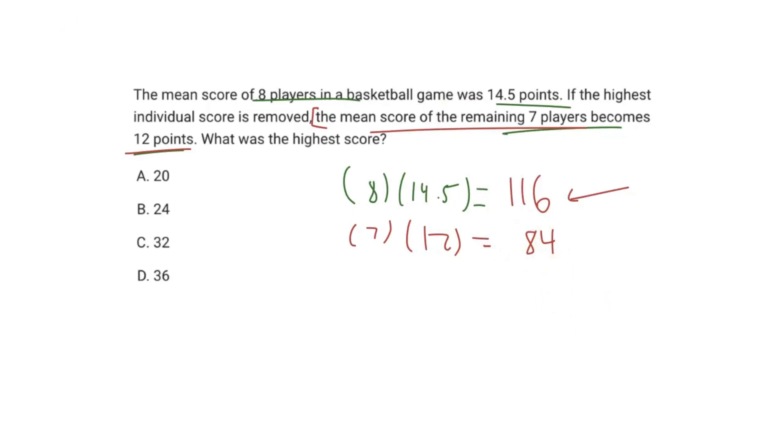So now we have to really understand these numbers in context. 84 represents the total number of points scored by the seven players, right? Because 12 points is the mean of the seven players, so 7 times 12 is 84. That's the total number of points that they score.